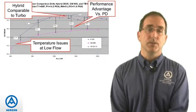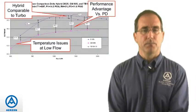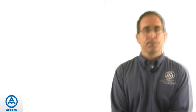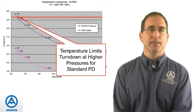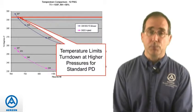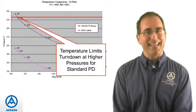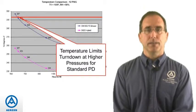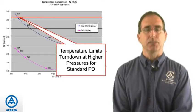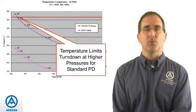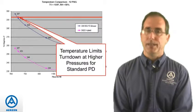The hybrid is actually comparable in performance to the turbo. Even though the standard PD blower has that turndown range, you can run into temperature issues at low flow. Here's a diagram that shows the discharge temperature of a standard PD blower and our hybrid at a given set of high-pressure conditions. The red line on this diagram is the maximum allowable temperature for that blower, beyond which you start to damage it. As the flow slows down, the discharge temperature actually increases. For the standard PD blower, it hits that maximum temperature before reaching the rotational limit, which limits your turndown — whereas the hybrid, because it's running more efficiently, never even gets close to that.